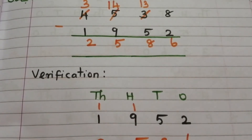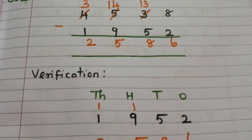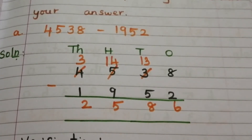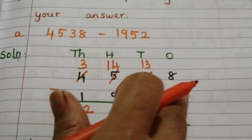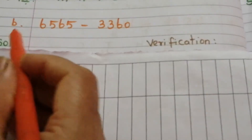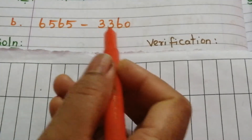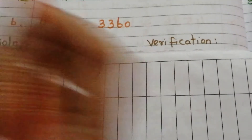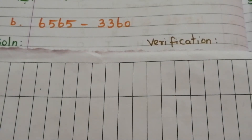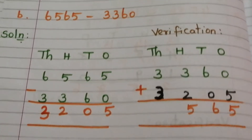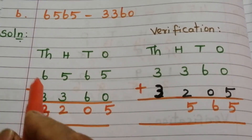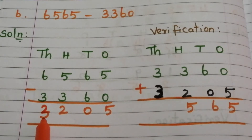Our answer is 4538, which is equivalent to our minuend 4538, so our answer is correct. Problem B: 6565 minus 3360. Subtracting: 5 minus 0 is 5, 6 minus 6 is 0, 5 minus 3 is 2, 6 minus 3 is 3. The answer is 3205.